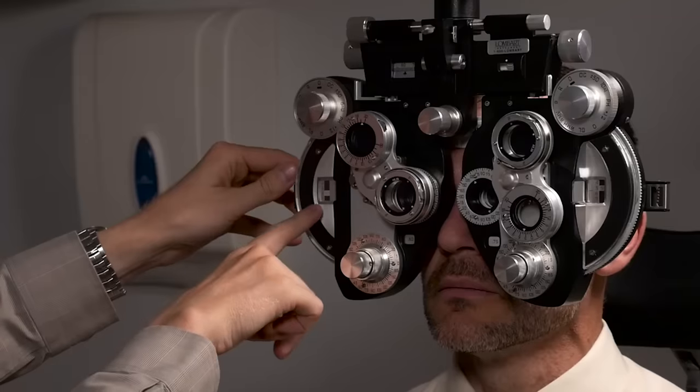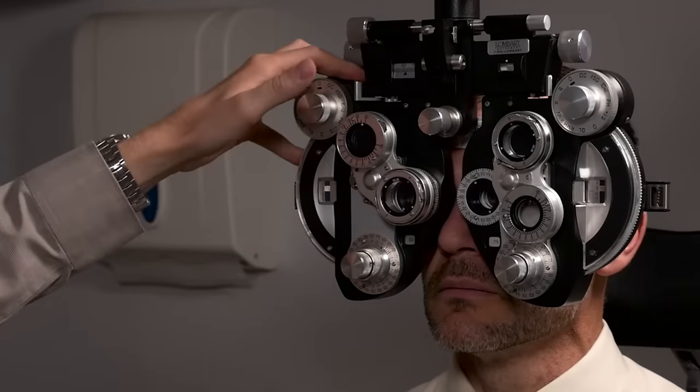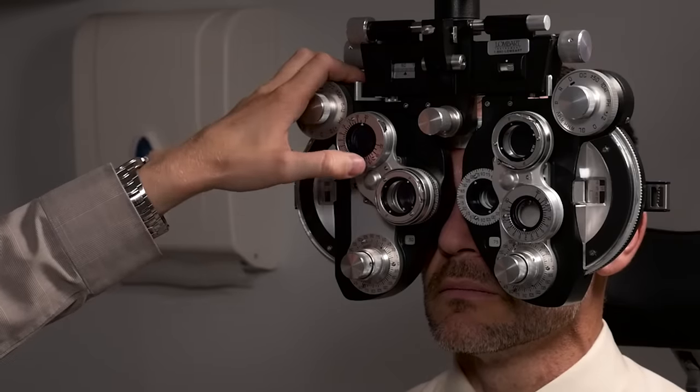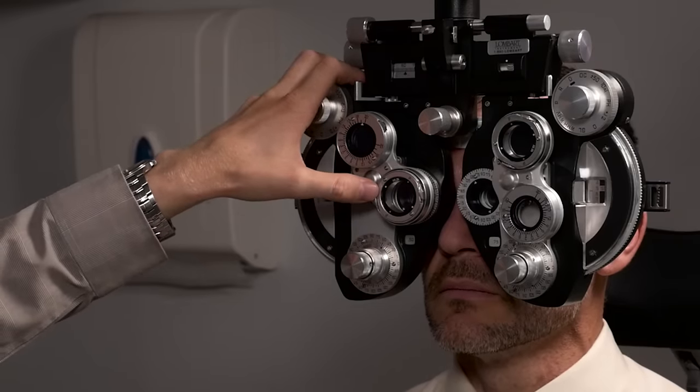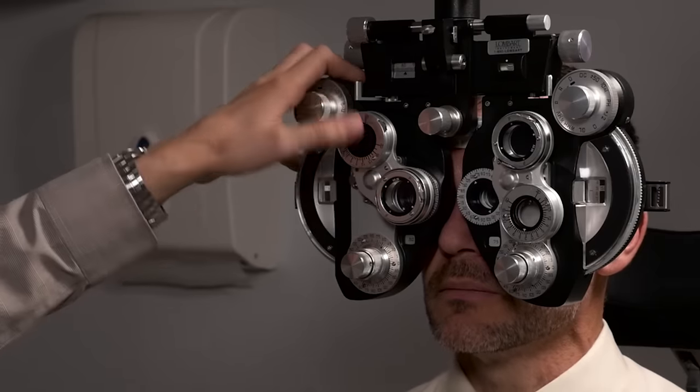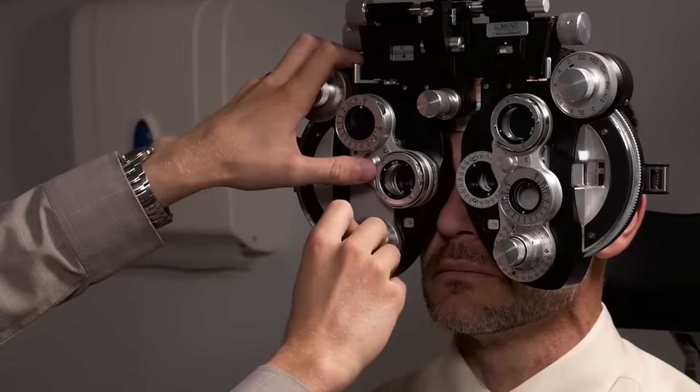Because I've added 0.5 cylinder of essentially minus because I'm taking away some plus, to compensate for that I have to add a quarter of plus here in the spherical component of the phoropter to maintain a spherical equivalent of the prescription. So we'll ask him again what's more clear? Number one or number two? About the same.